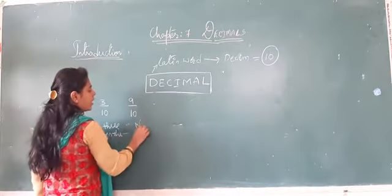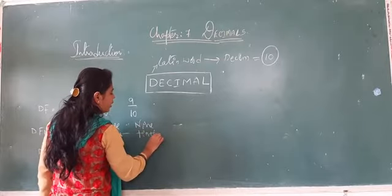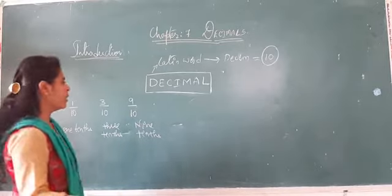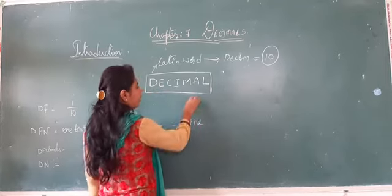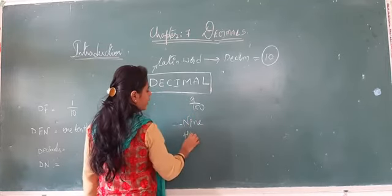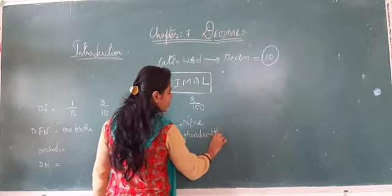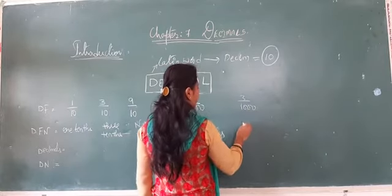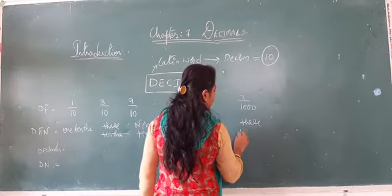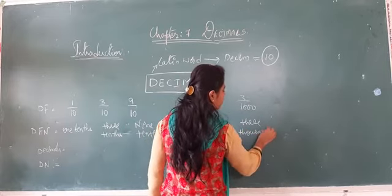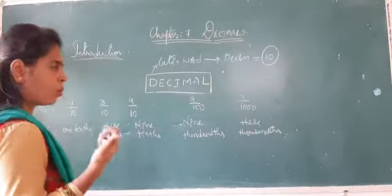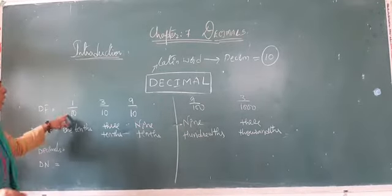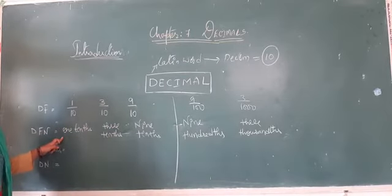If it is 9 by 100, it is read as 'nine hundredths' — the 'ths' suffix is added. If it is 3 by 1000, it is read as 'three thousandths.' The pronunciation of 'ths' is important. These are the decimal fraction names, and they are written in decimal form.